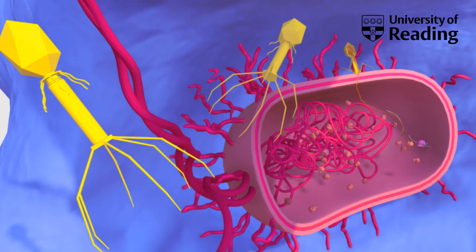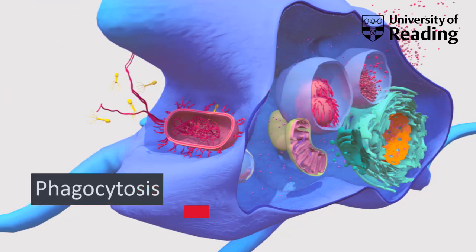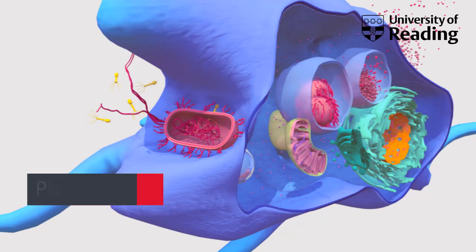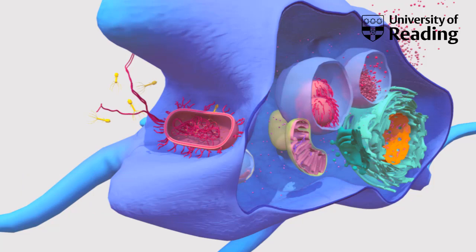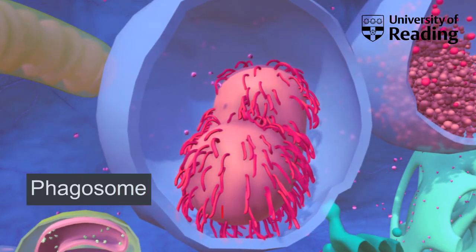But it looks like this bacterium is not going to survive long enough for the bacteriophage to complete its replication cycle. An amoeba is engulfing or eating the cell by phagocytosis, and the bacterial cell is then trapped inside a phagosome surrounded by a membrane that formed when the cell membrane pinched off during the engulfment process.